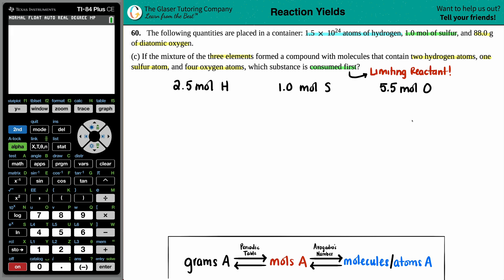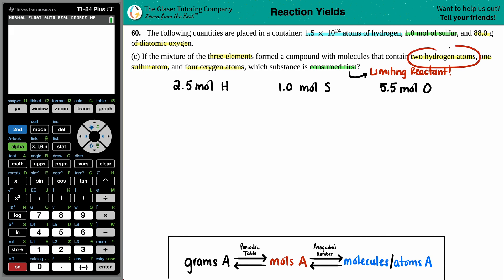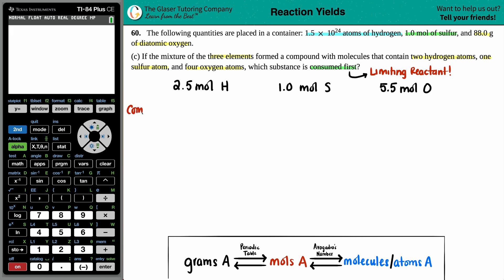Is it going to be hydrogen, sulfur, or oxygen? This comes from what's going on with the three atoms. We're trying to make a compound that contains two hydrogen atoms. Since we're dealing with all quantities in moles, we can say that this compound — whatever it is — is going to require two moles of hydrogen, one mole of sulfur, and four moles of oxygen.